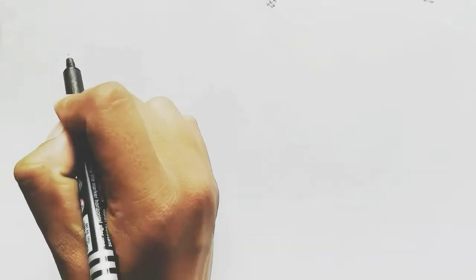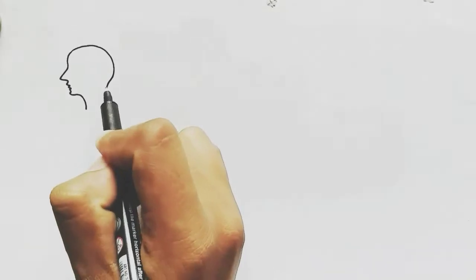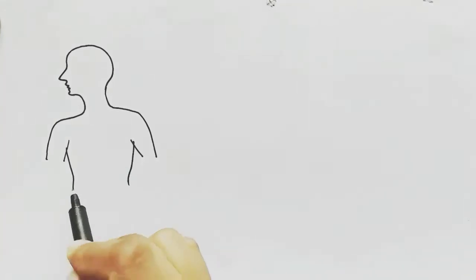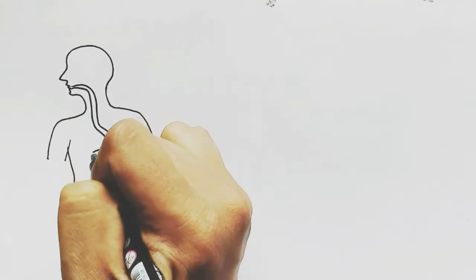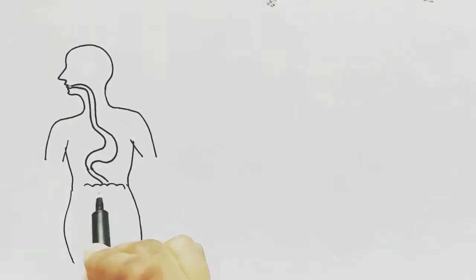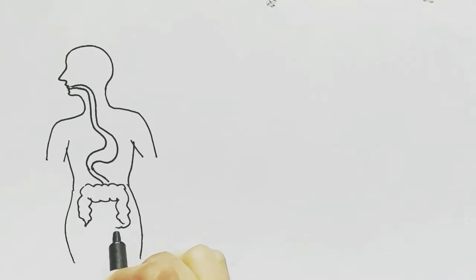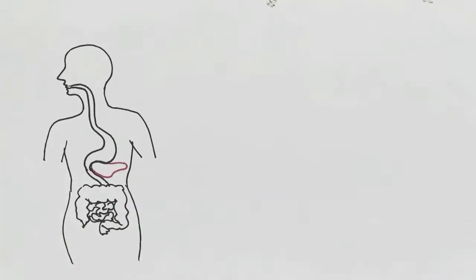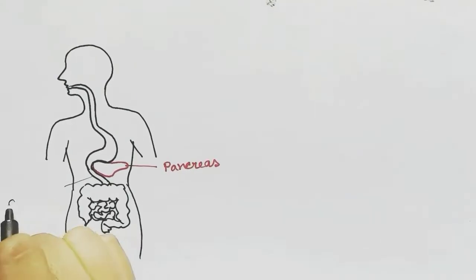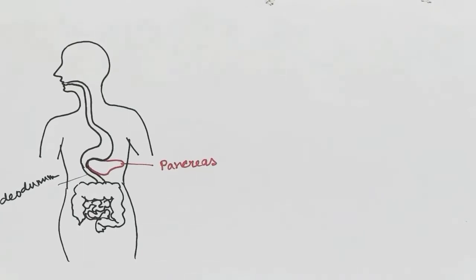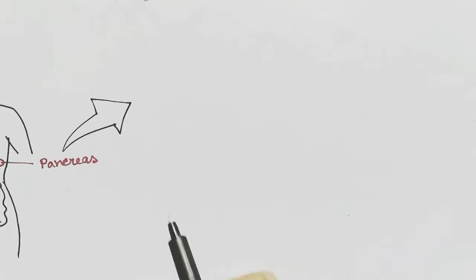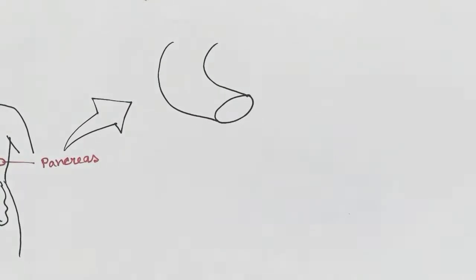Today we are going to talk about pancreas histology. We are here in the human body — the esophagus coming from the mouth, the stomach, after the stomach the small intestine and the large intestine. The pancreas is present at the curve of the small intestine called the duodenum.